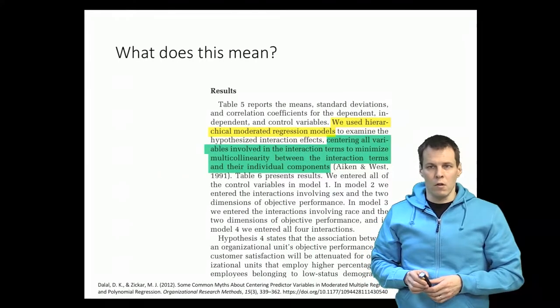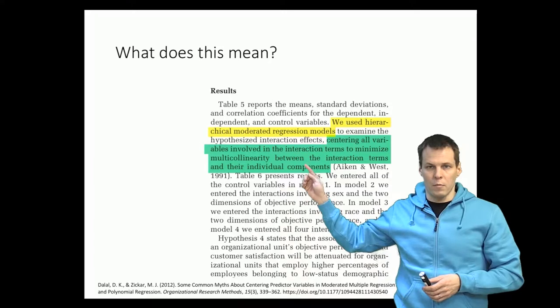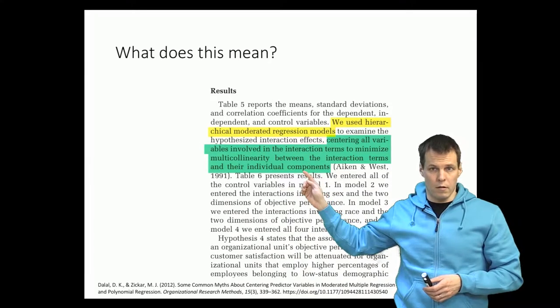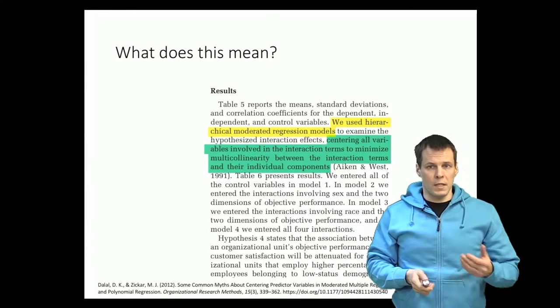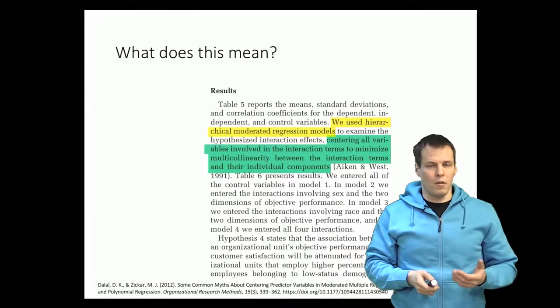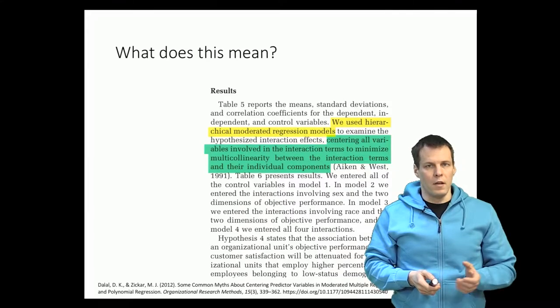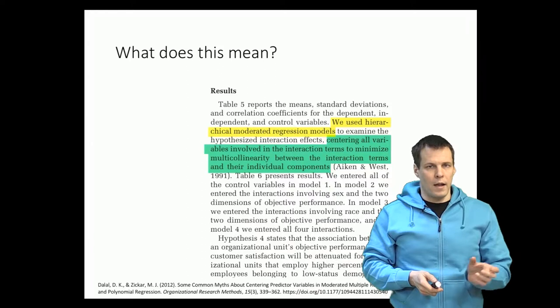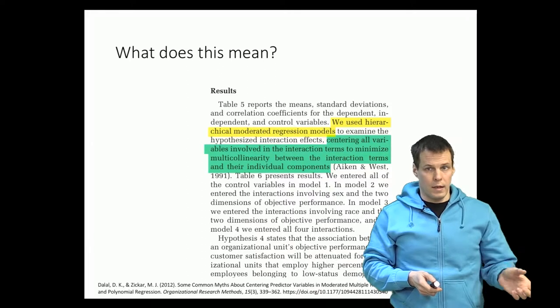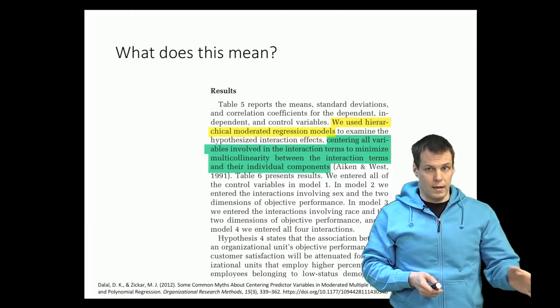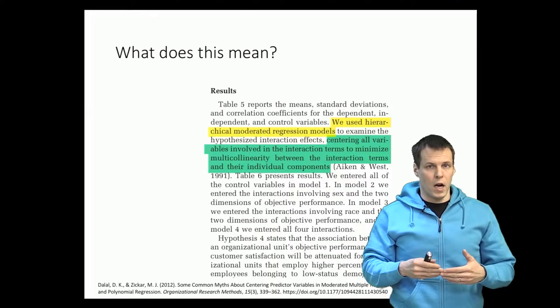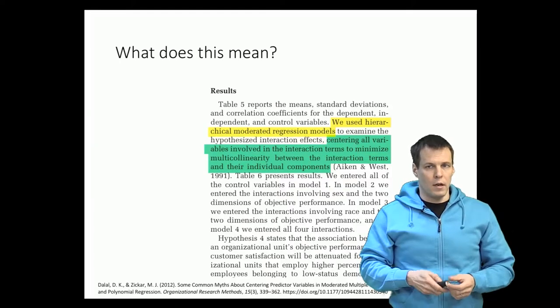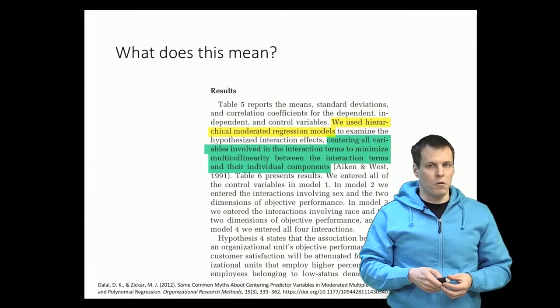In Heckman's paper the authors argued that they did center the variables to reduce multicollinearity. The idea of centering and multicollinearity is that if you have X and M and then you form a product of X and M, then the product will be correlated with both X and M because those two variables form the interaction and by centering we can reduce those correlations.